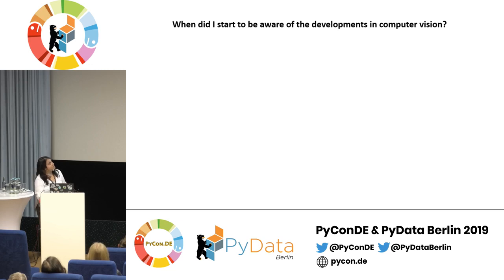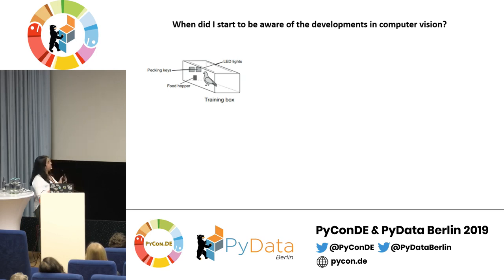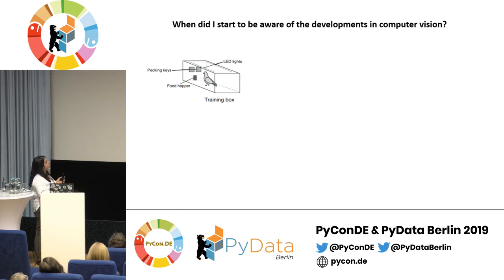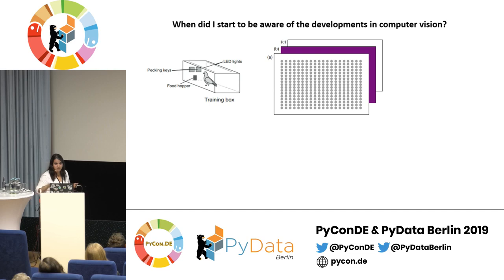Then the time came when I became aware of developments in computer vision — this happened during my master's thesis. If you're working in a laboratory with birds, you would use a training box design — you may know the Skinner box. You would have pecking keys and a food hopper, and if the pigeon does what you want — say, peck a key — then food comes. In my experiment I was checking how dopamine changes pigeons' decision-making behavior.